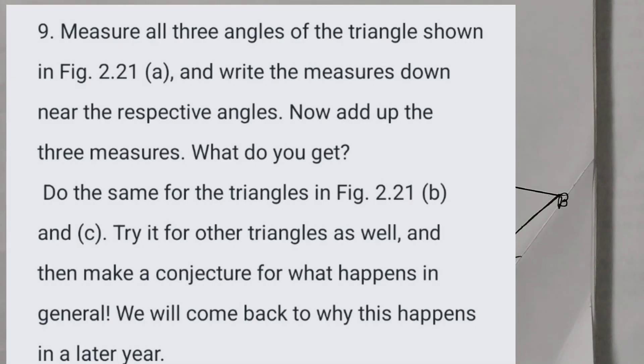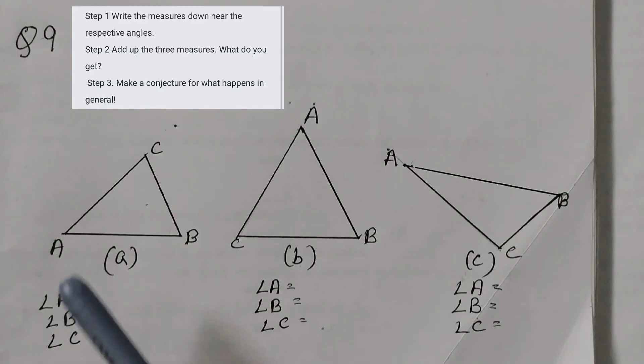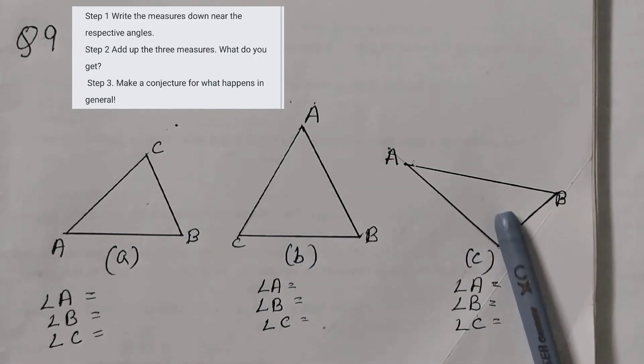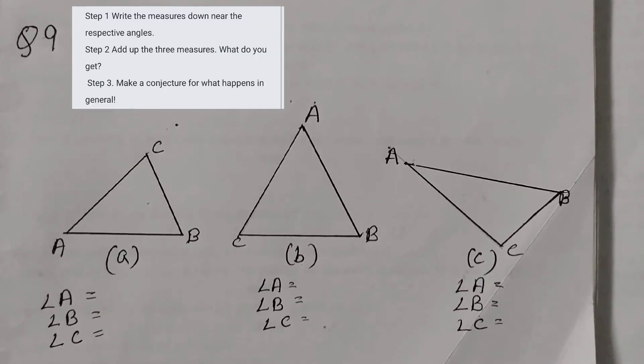Try it for other triangles as well and then make a conjecture for what happens in general. We will come back to why this happens in a later year. So what the question is asking is you measure all three angles, add it up for this one also and this one also, and make your own triangles as well and then do the same thing and see what do you find out. Is there any pattern or some rule or conjecture that you find out?